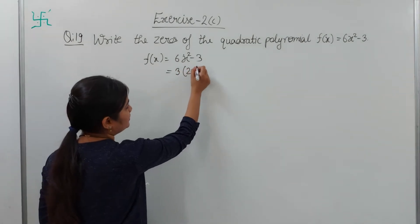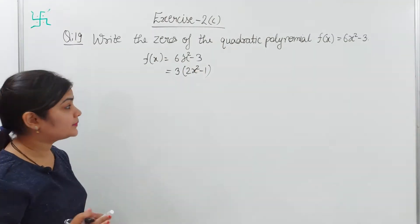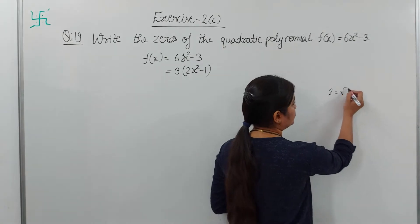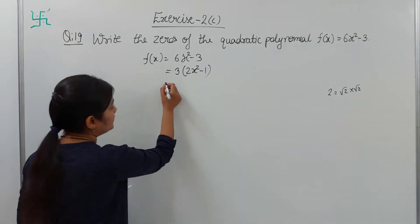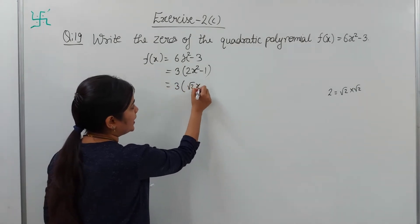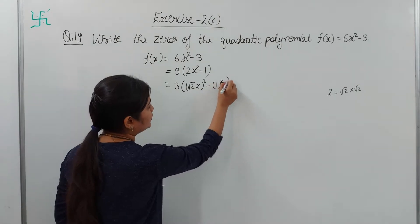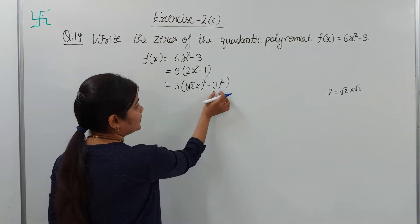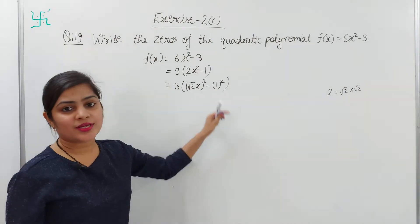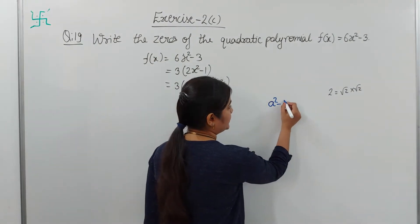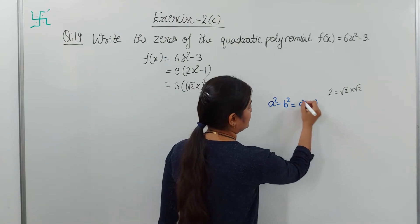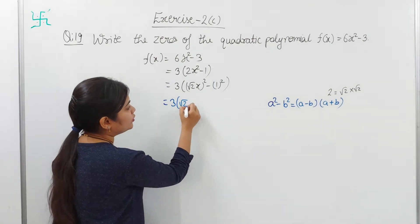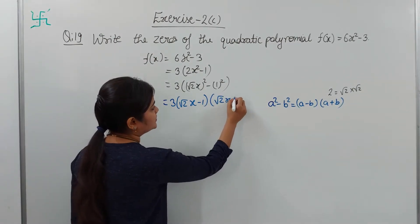We can take 3 as common, so we get 3 into (2x² minus 1). Now, 2 can be written as root 2 into root 2, so we can write this as 3 into (root 2 · x)² minus 1². This is in the form a² minus b² — where a = root 2 · x and b = 1 — and a² minus b² equals (a minus b)(a plus b). So we apply that: 3 into (root 2·x minus 1)(root 2·x plus 1).